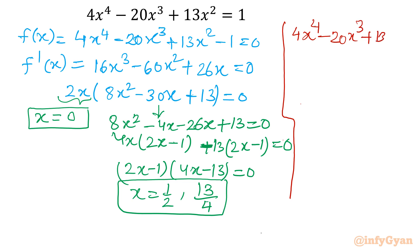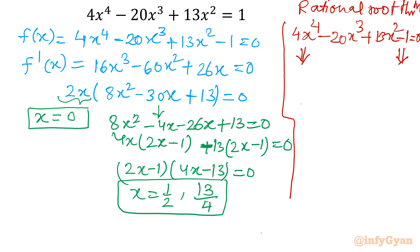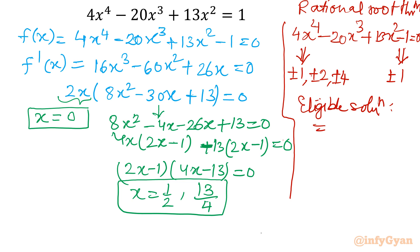Let me write the equation again: 4x⁴ minus 20x³ plus 13x² minus 1 equals 0. The constant coefficient is 1 and the leading coefficient is 4. Using the rational root theorem, the eligible factors of the leading coefficient are plus or minus 1, plus or minus 2, plus or minus 4. The constant term gives plus or minus 1. So the possible rational roots are plus or minus 1, plus or minus 1/2, plus or minus 1/4.